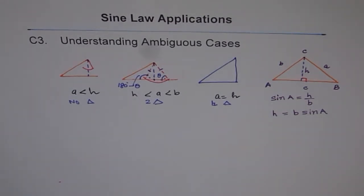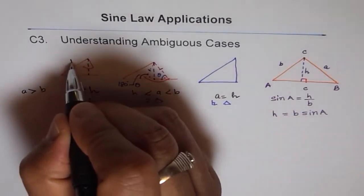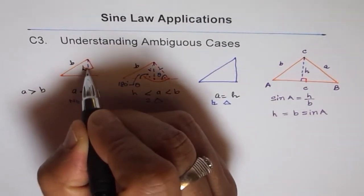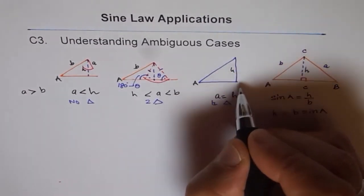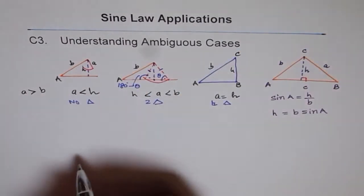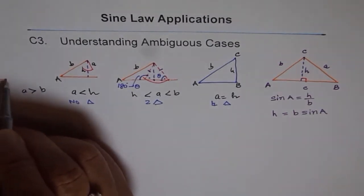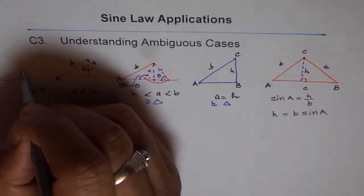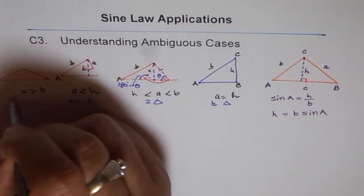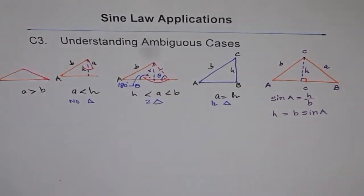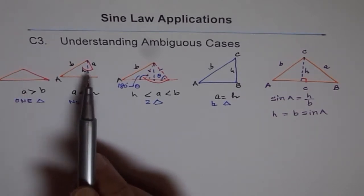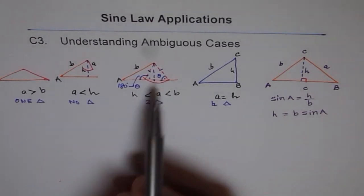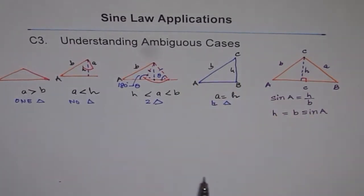The last scenario for the acute case: if a is greater than B, then we have exactly one triangle — it is certain. To summarize so far: if a equals H we have a right triangle; if a is less than H, no triangle; if H < a < B, two triangles; if a > B, one unique triangle.